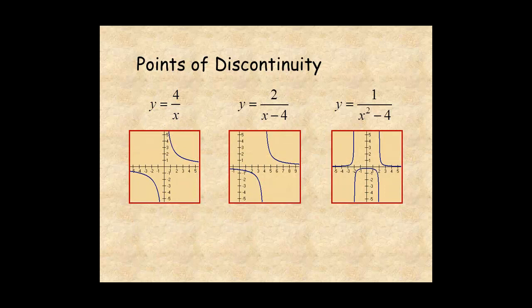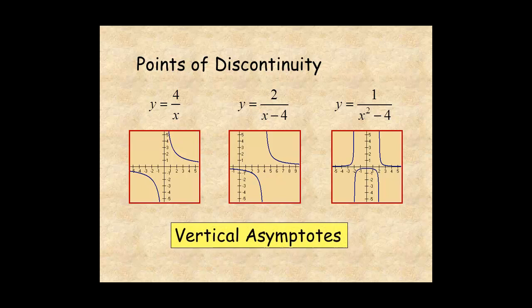When a point of discontinuity is only a zero of the denominator, it's called a vertical asymptote. This is a vertical line that you can imagine the function approaching infinitely close but never reaching. A vertical asymptote is referred to as a VA. For the first function, the VA is the vertical line x equals 0 — the y-axis.